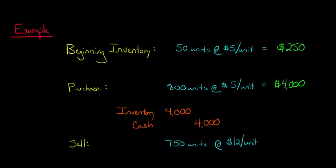So now we decide, after we've made the purchase, now we've added this $4,000 worth of inventory to our original $250 worth, and now we make a sale. We sell 750 units of inventory, and we sell it for $12 a unit.